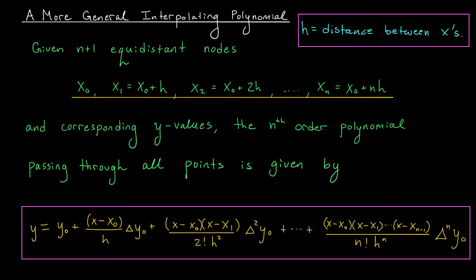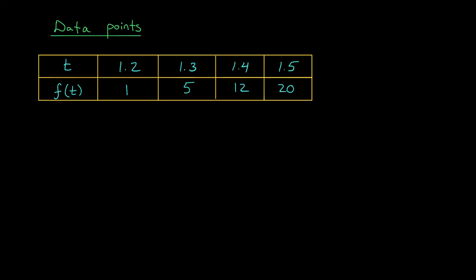Let's try to use this more general formula to answer the hedgehog question. Based on the formula from the previous slide, we're going to have to figure out a few things. Firstly, we need this new term h, the distance between our nodes. Well, if you take a look at any of the nodes here, you'll see that they are equidistant, and the distance between them is 0.1. So that's our h value.